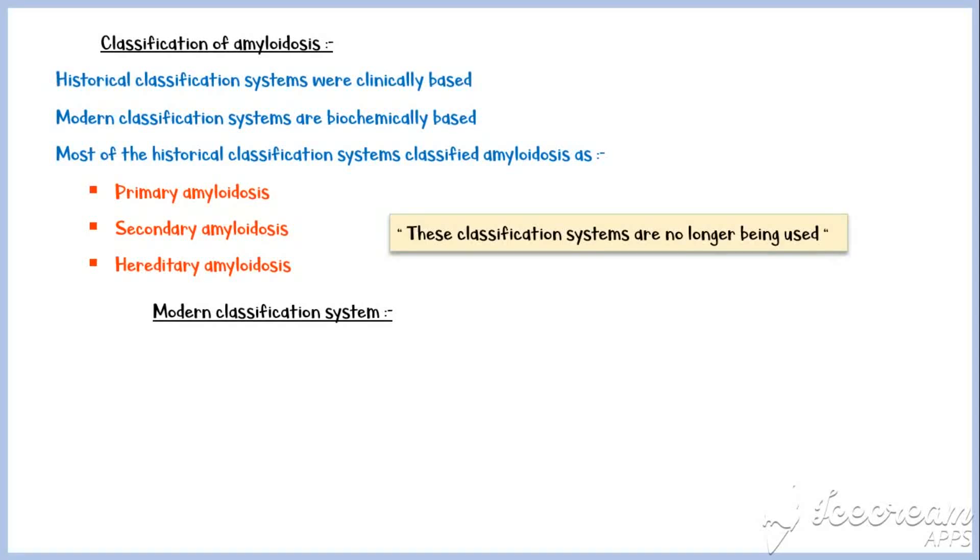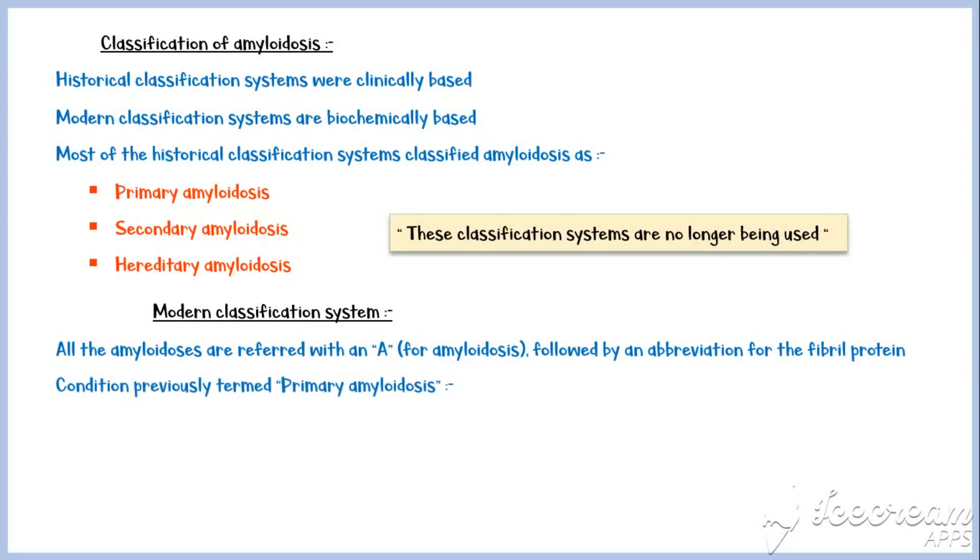All the amyloidoses are referred with a capital A, that is for amyloidosis, followed by an abbreviation for the fibril protein component. For example, in the condition previously termed primary amyloidosis, the fibril protein is an immunoglobulin light chain, which is denoted by capital L. I will explain about these light chains in more detail in the next section.